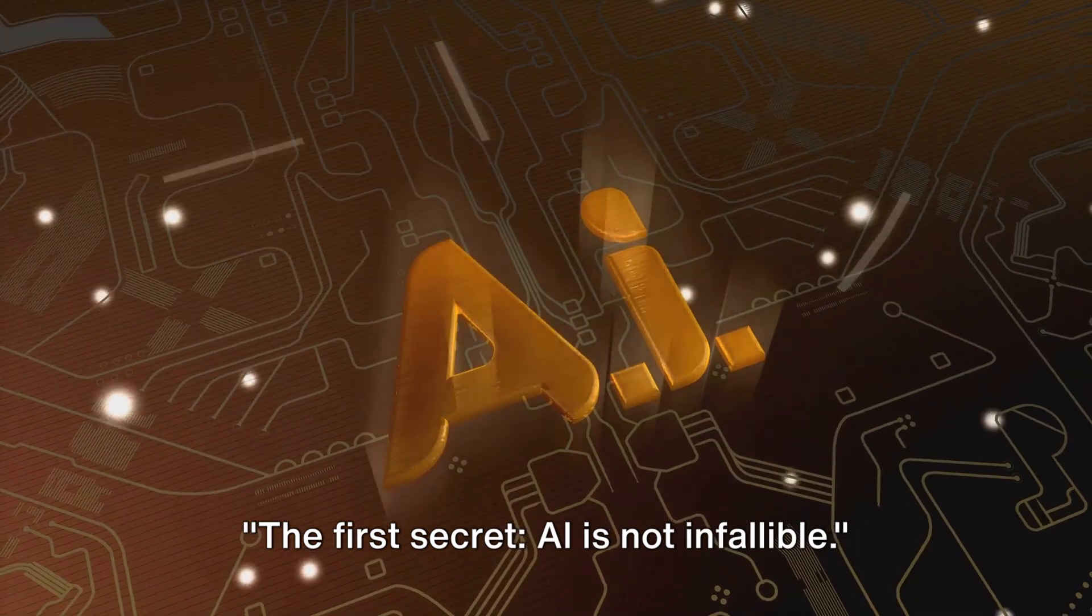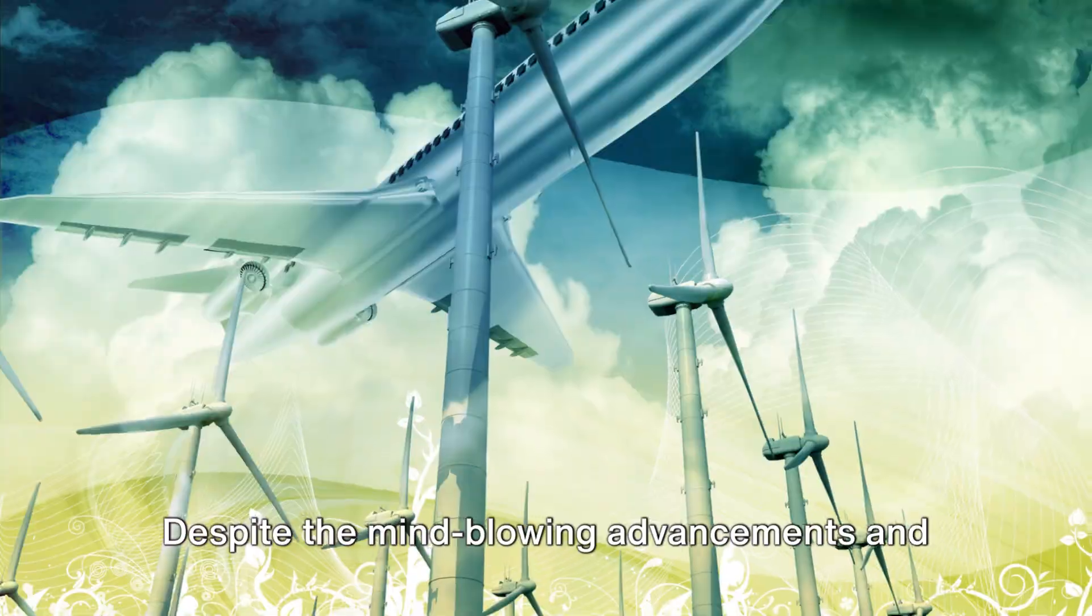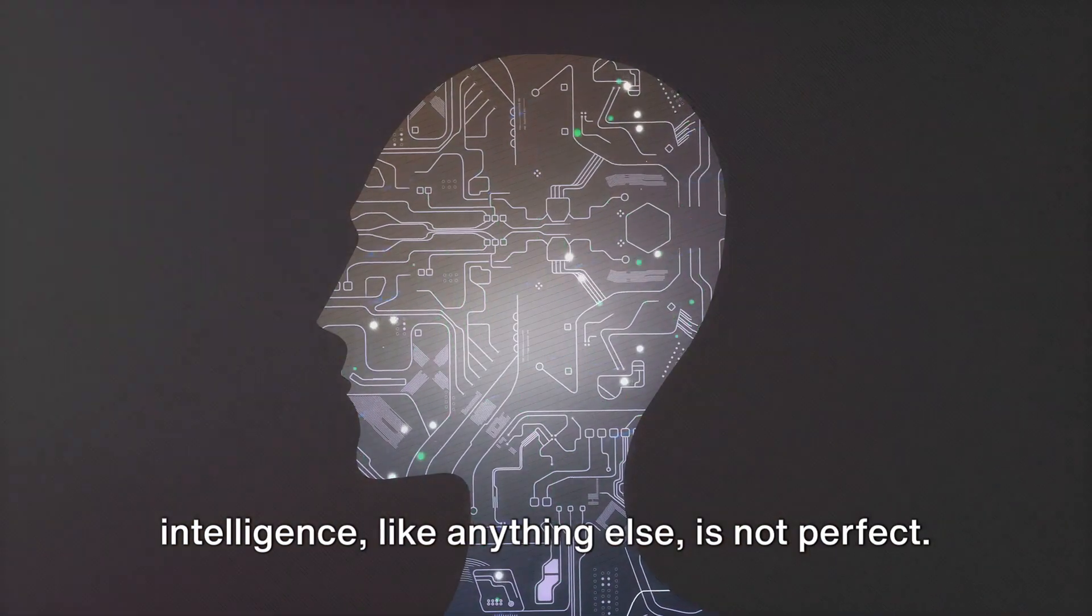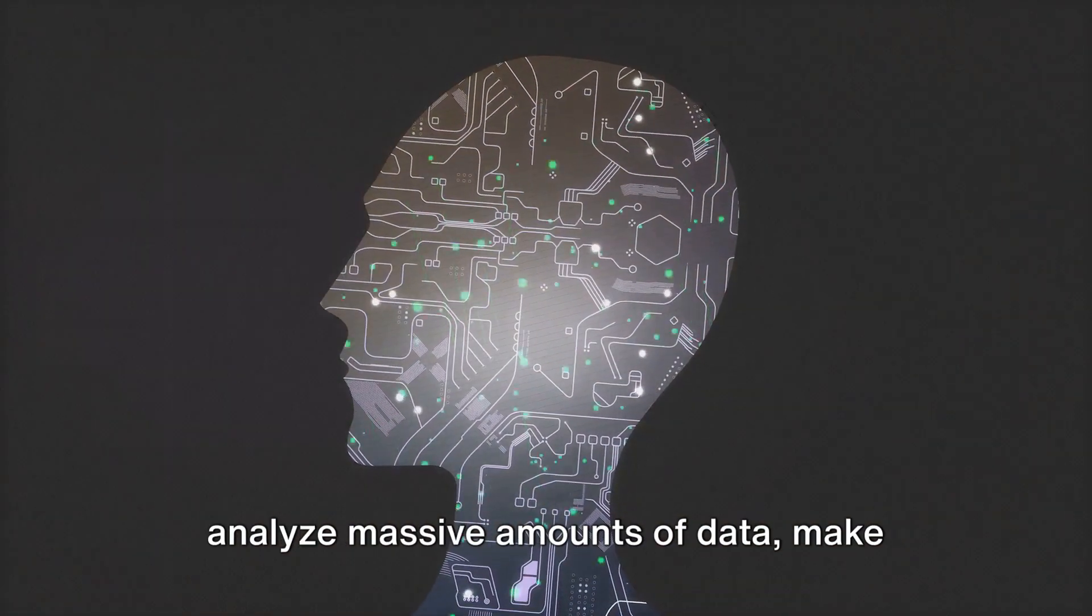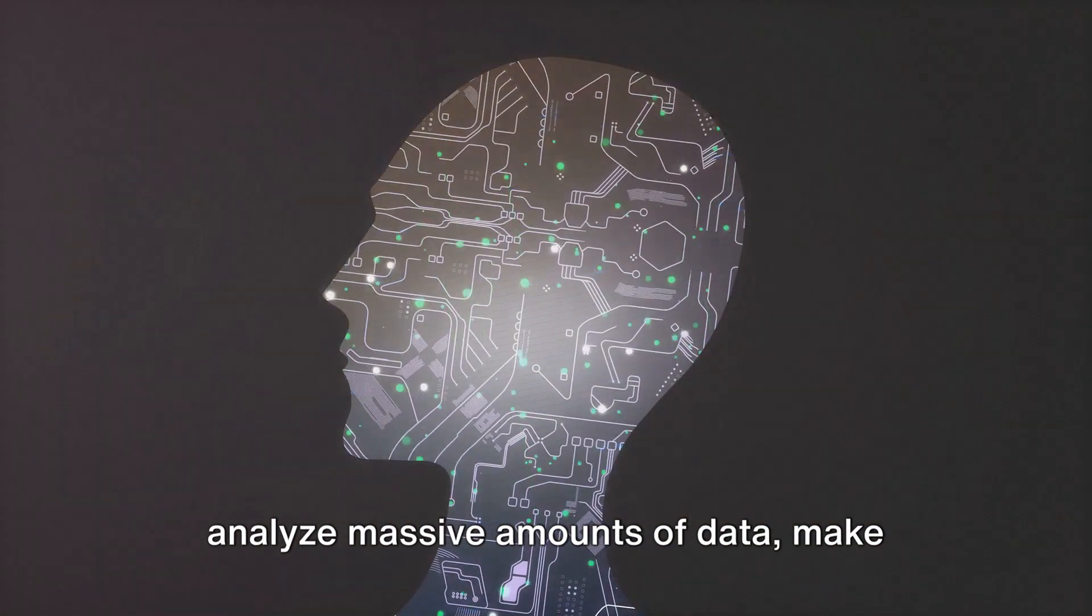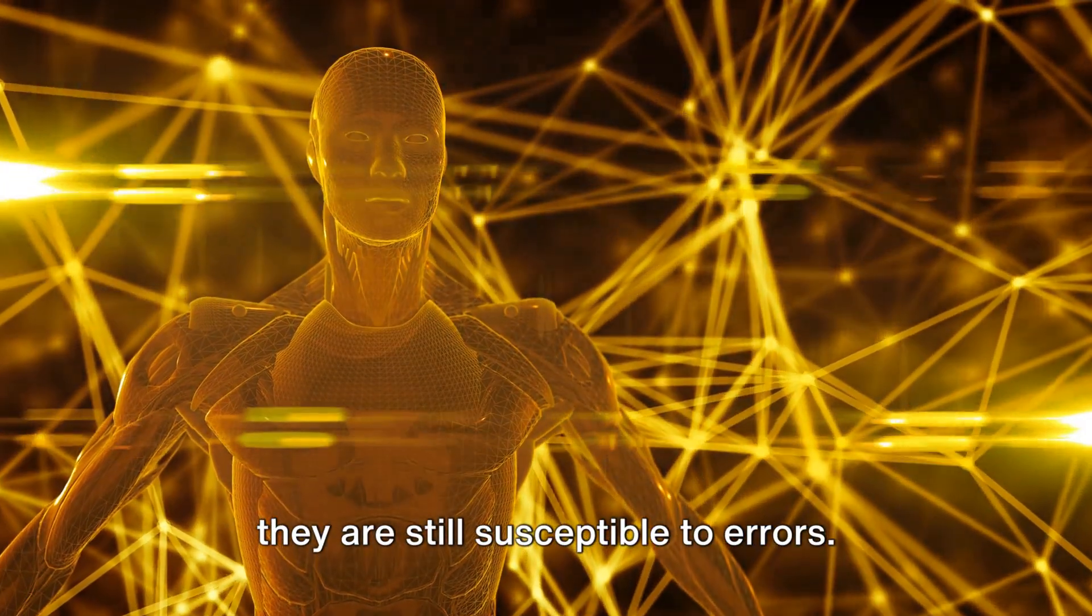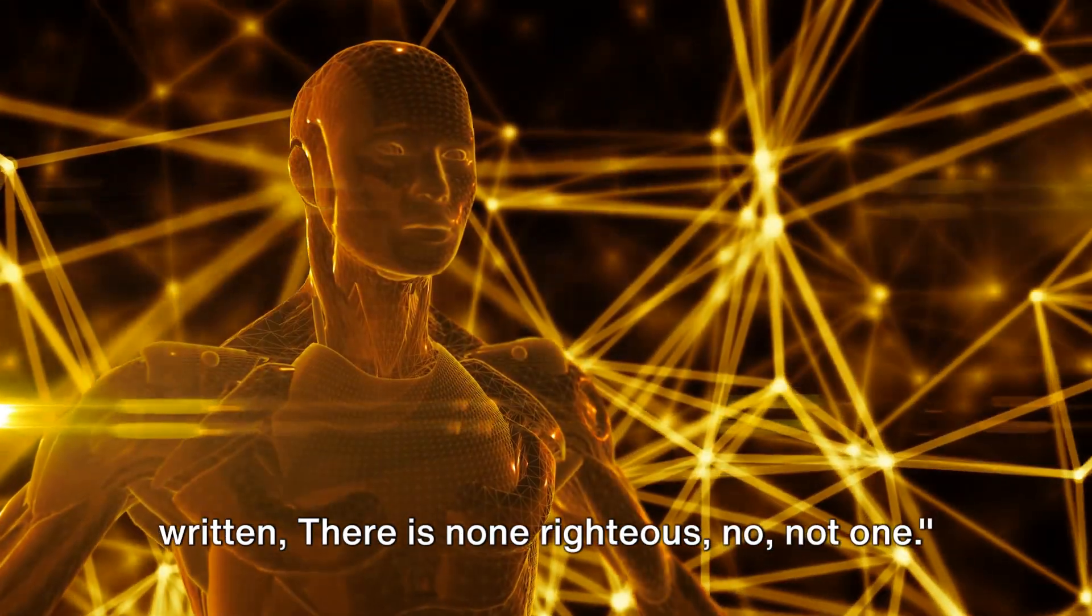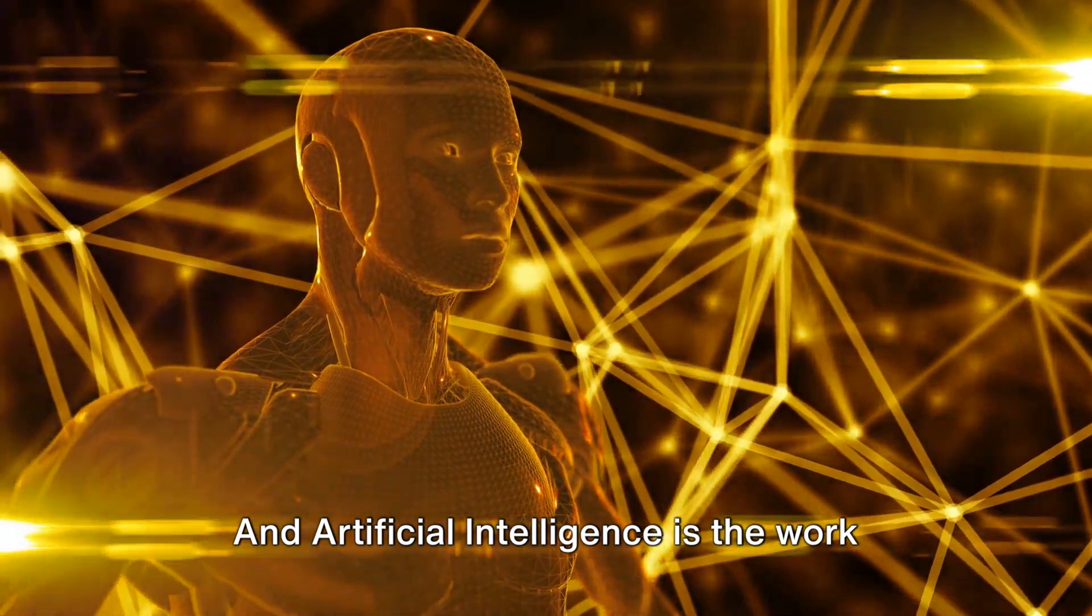The first secret: AI is not infallible. It might sound shocking but it's true. Despite the mind-blowing advancements and jaw-dropping capabilities, artificial intelligence like anything else is not perfect. While AI systems have the power to analyze massive amounts of data, make predictions, and automate complex tasks, they are still susceptible to errors. Why is that? Romans 3:10 KJV says as it is written, there is none righteous, no not one. And artificial intelligence is the work of man.